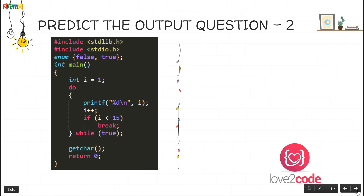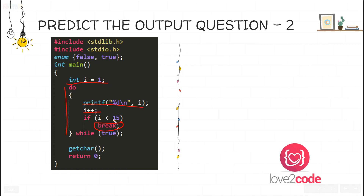Let's discuss the second question, which is similar to the previous one. Integer i is initialized to 1, and this is also a do-while loop. The difference is that here we are using a break statement. It will print 1 and the cursor moves to the next line. Then i is post-incremented to become 2. Since 2 is less than 15, we go inside the if-condition and encounter a break statement.